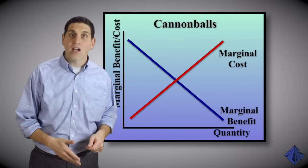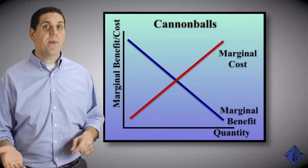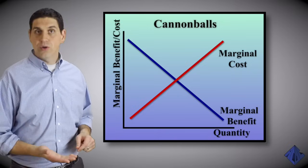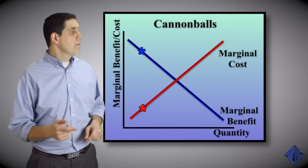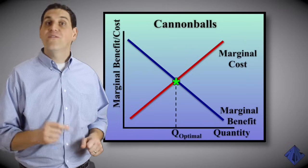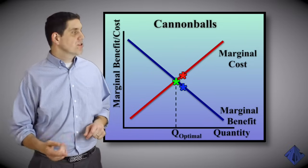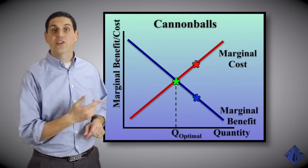The point is, the marginal cost of doing cannonballs is upward sloping. So if you're trying to make the best decision, how many cannonballs do you do? Well, where the marginal benefit hits the marginal cost — right here is the optimal or efficient number of cannonballs that you should do. If you do any cannonballs above this quantity, the additional cost is greater than the additional benefit. Now this idea of marginal analysis is the basis of all of microeconomics. You're going to see this concept over and over again.